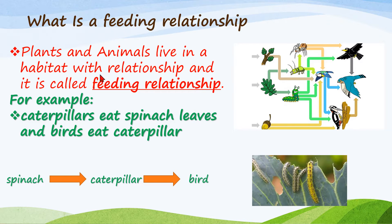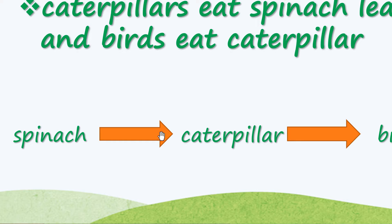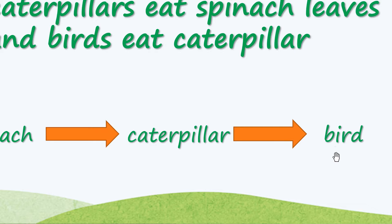For example, caterpillars eat spinach leaves and birds eat caterpillars. In the diagram, you can see that spinach is eaten by the caterpillar — the arrow indicates 'eaten by'. You can also write it as: spinach eaten by caterpillar, caterpillar eaten by bird.